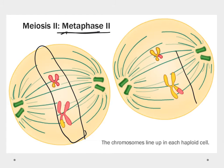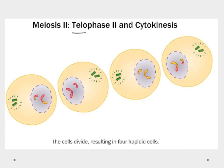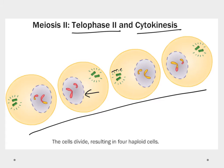In metaphase 2, chromosomes line up along the metaphase plate and attach to the mitotic spindle. In anaphase 2, the centromere splits and sister chromatids separate — each cell now gets individual chromatids instead of pairs. In telophase 2, new nuclear membranes form and the mitotic spindle disappears. Cytokinesis then produces four haploid cells, each with half the DNA of the original, so that combining two haploid gametes restores the full diploid set.